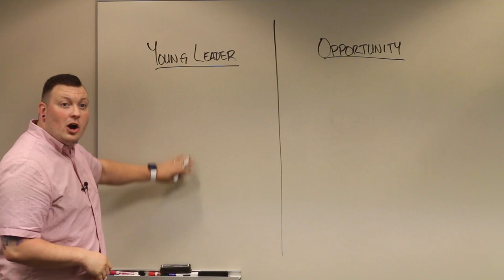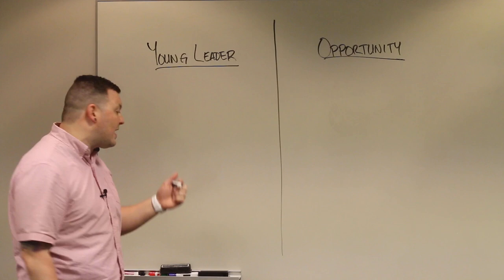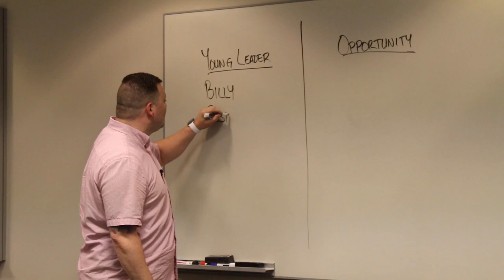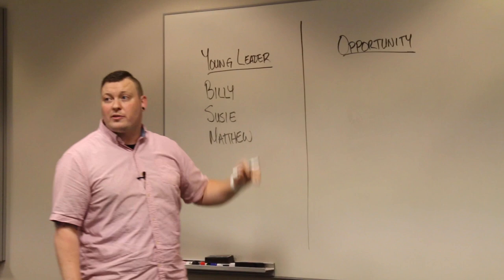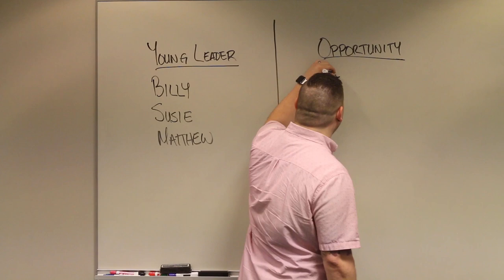So we would say, maybe create a young leader inventory. Maybe get a group of people at your church who have social capital and start thinking through names. Maybe it could be Billy. Maybe it would be Susie. Maybe it would be my name. Maybe it's Matthew. But actually write down names. Maybe have those leaders write down five young people who could serve and then start thinking about opportunities, ways that they can actually serve.